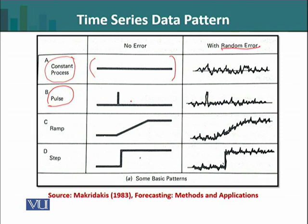The pulse process is a constant process, but at a certain interval the process takes a jump — which is why we call it a pulse. Without error, it looks like a smooth line with some intermittent peaks. In a stochastic process with random error, some noise continues but there are certain repeating peaks, and such a pattern is called a pulse.